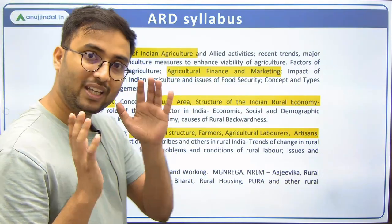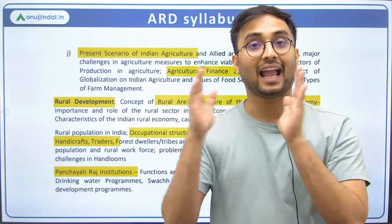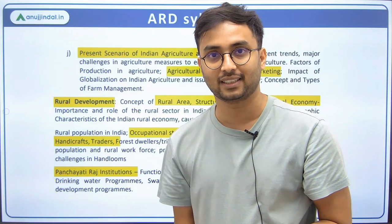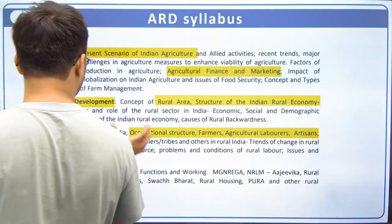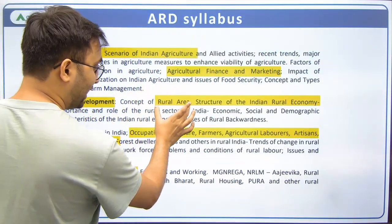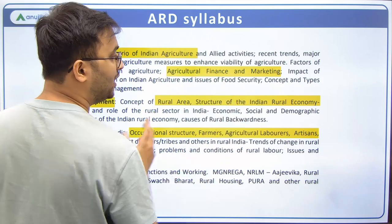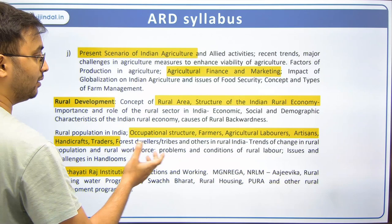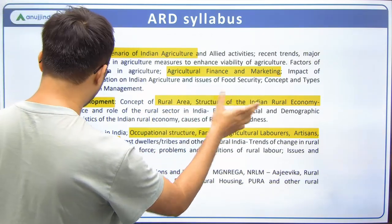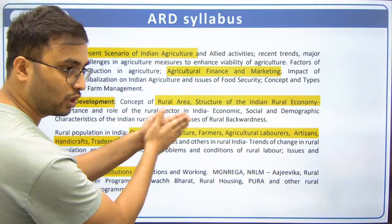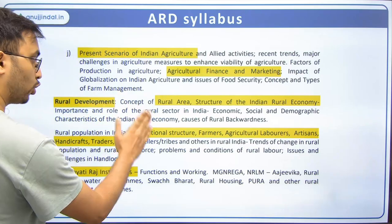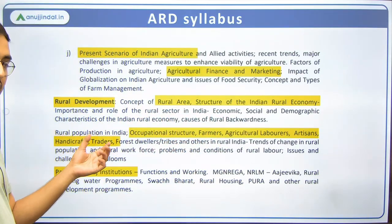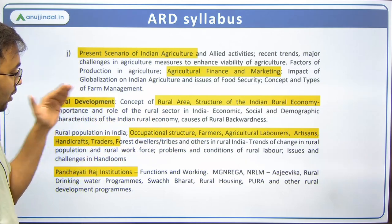The next major part is rural development — covering the structure of the Indian rural economy, rural population, and economic, social, and demographic aspects of the rural economy. Then comes occupational structure including farmers, agricultural labor, artisans, handicrafts, and traders — all micro topics under rural development.